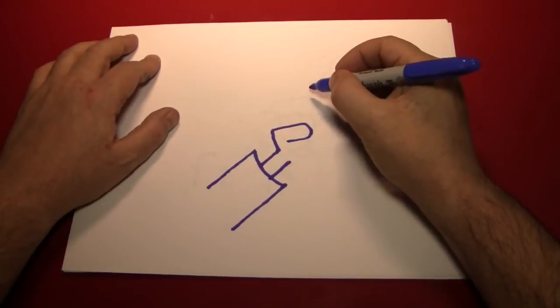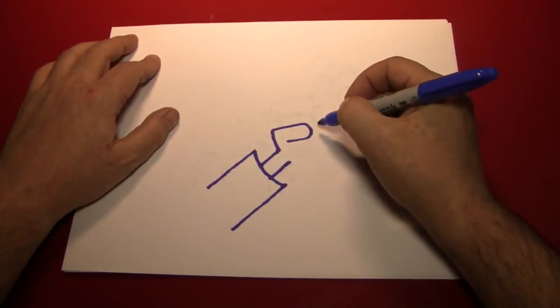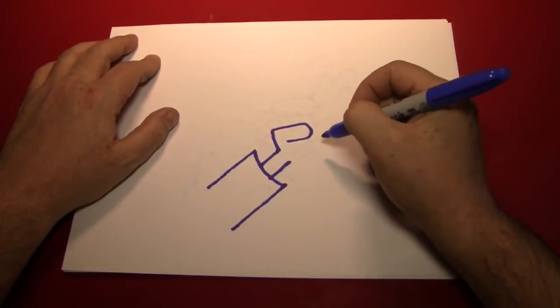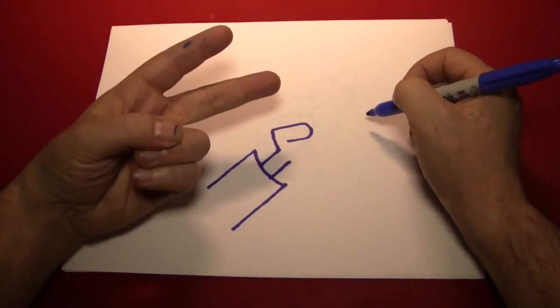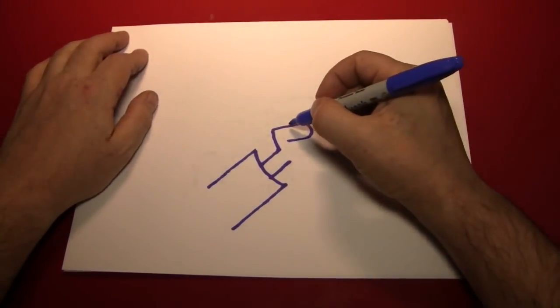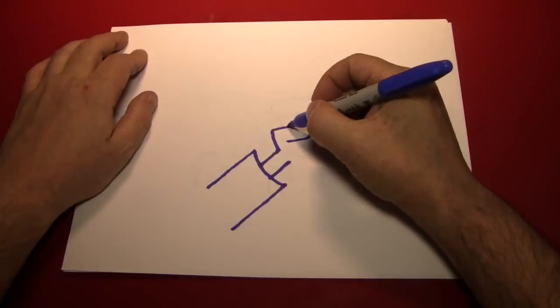And then the hand makes a V with these two fingers, the index and the middle finger. That's right, V for peace.